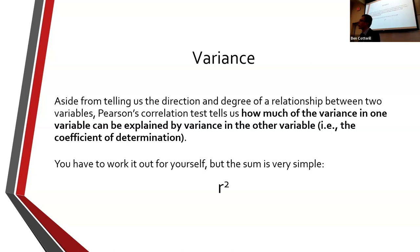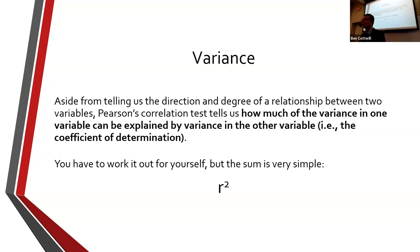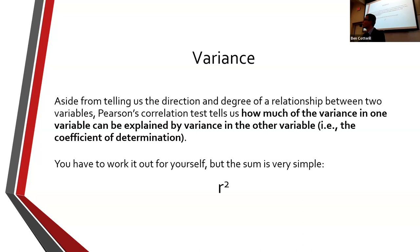Another thing we can calculate from the correlation coefficient is the variance — the amount of variance in one variable that can be explained by another. This is r-squared, meaning you square the correlation coefficient. For example, there is a correlation of 0.4 between the personality trait conscientiousness and university grades, found again and again across studies. So 0.4 times 0.4 is 16%. Conscientiousness explains 16% of the variance in university grades — it explains 16% of the difference in university grades.